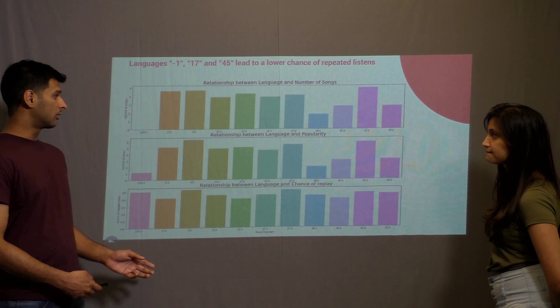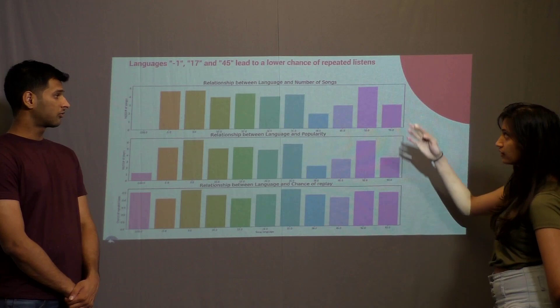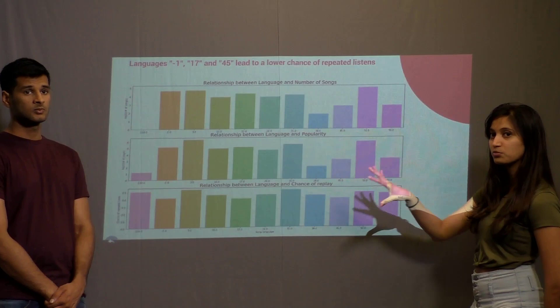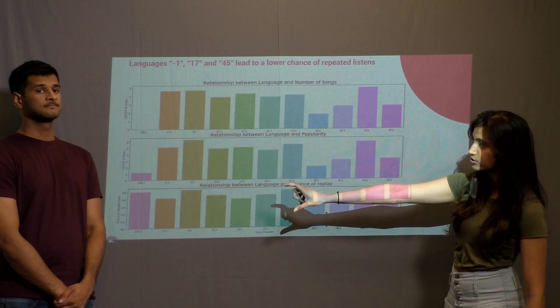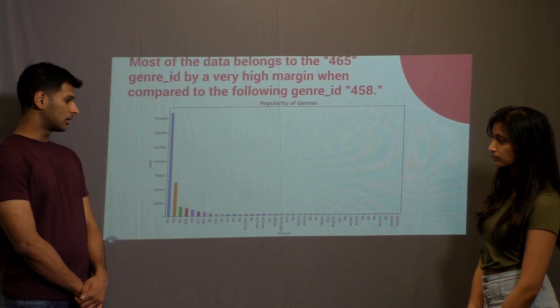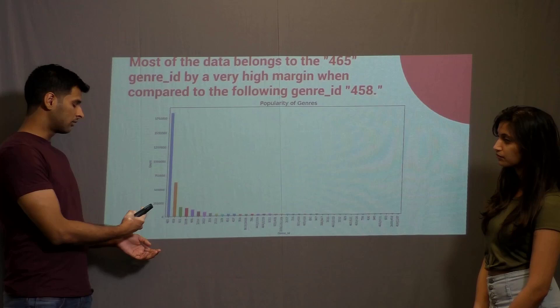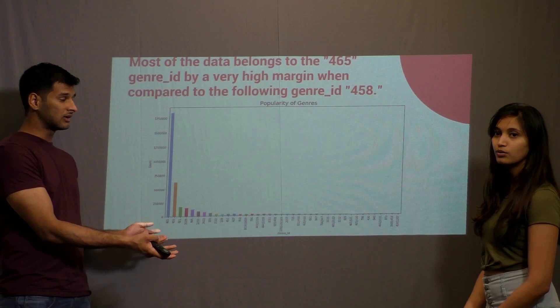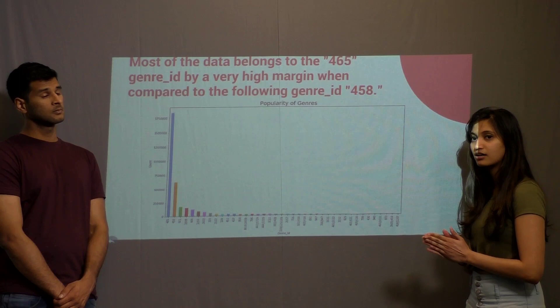We looked at the relationship between languages and various metrics like number of songs, popularity, and chances of being replayed, observing an almost similar distribution across the three features — except for a particular language in category minus 100. Examining genre popularity, the majority of users prefer three genres, with the most popular being genre 465. Since this dataset is from Asian countries, we intuitively feel this genre could be pop.